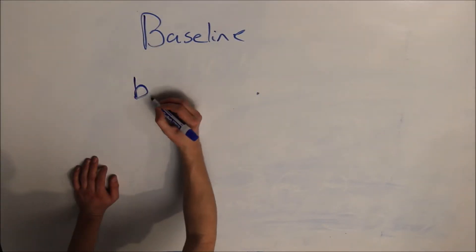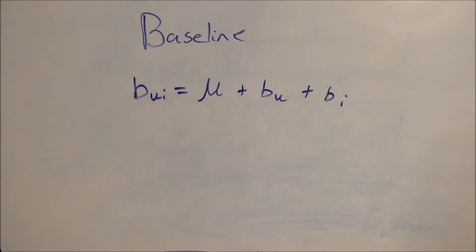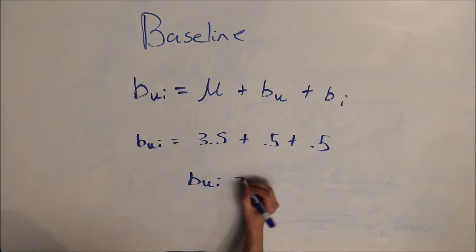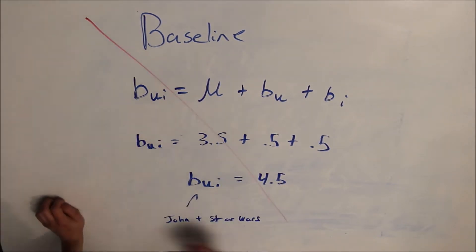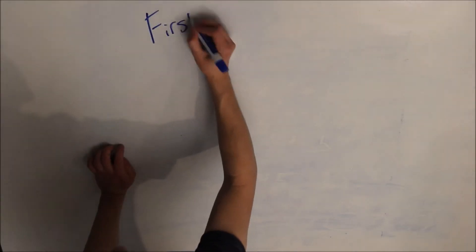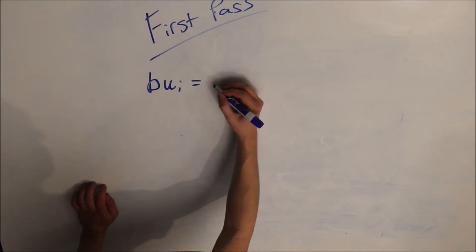So that was our baseline model, where you have the summation of mu plus BU plus BI. Plugging the numbers we solve for, we get 3.5 plus 0.5 plus 0.5, or a BUI of 4.5. However, this is not what we want in the end. What we want is a better model, which is why we have a first pass to try to improve these results.